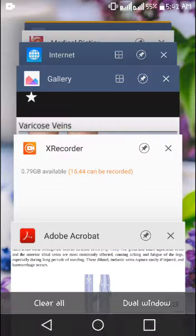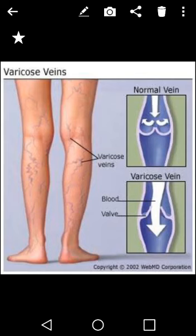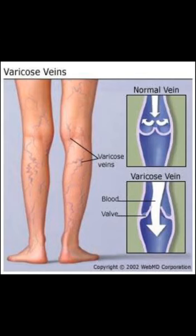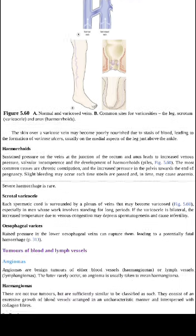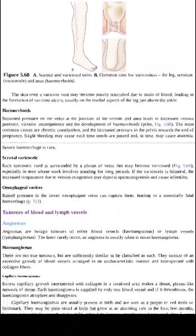Looking at the diagram, you can see these varicose veins are in the tibial region and are very visible on the skin. On the right side, you can see a normal vein with proper valves, and below it are varicose veins where the valves are not closing properly, so blood backflow is not prevented.